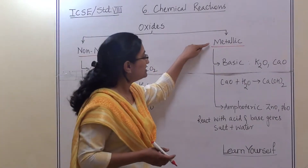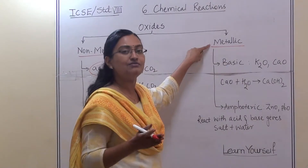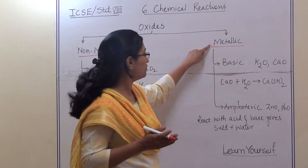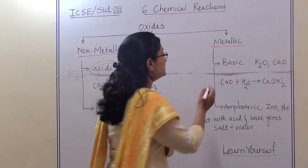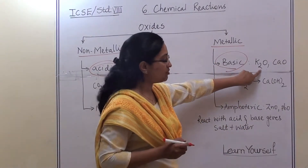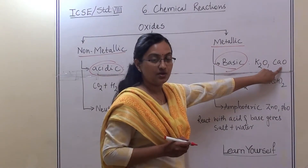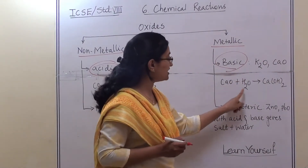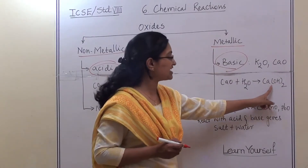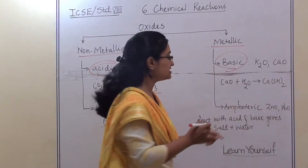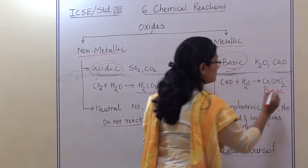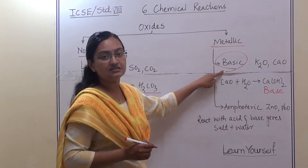Now let us look at metallic oxides. When a metal reacts with oxygen, it generates a metallic oxide. Metallic oxides are basic in nature — for example, potassium oxide and calcium oxide. When we mix these oxides with water, we get a basic medium. For example, calcium oxide gives us calcium hydroxide, which is a base. That is why metallic oxides are basic in nature.